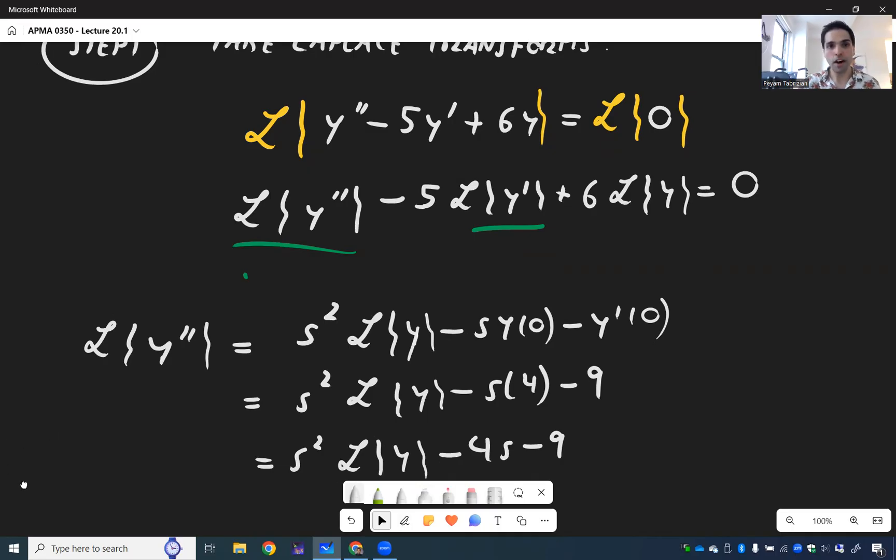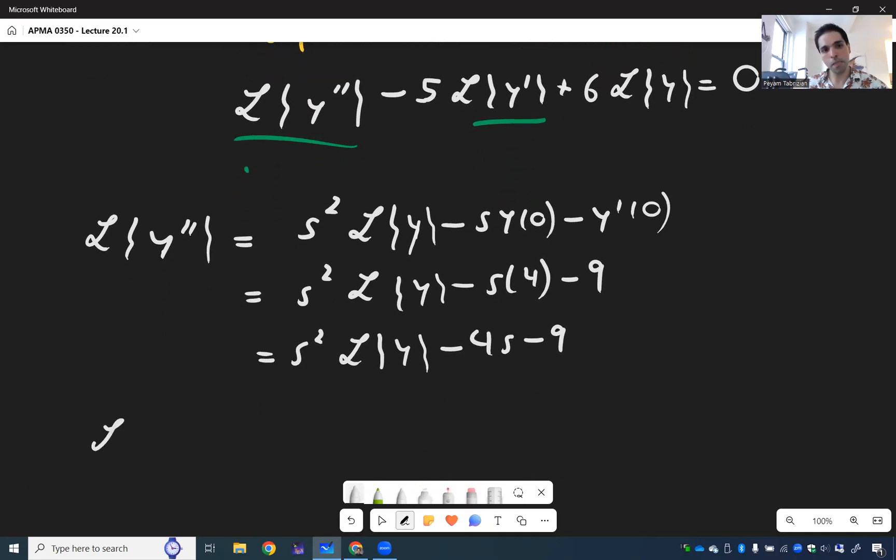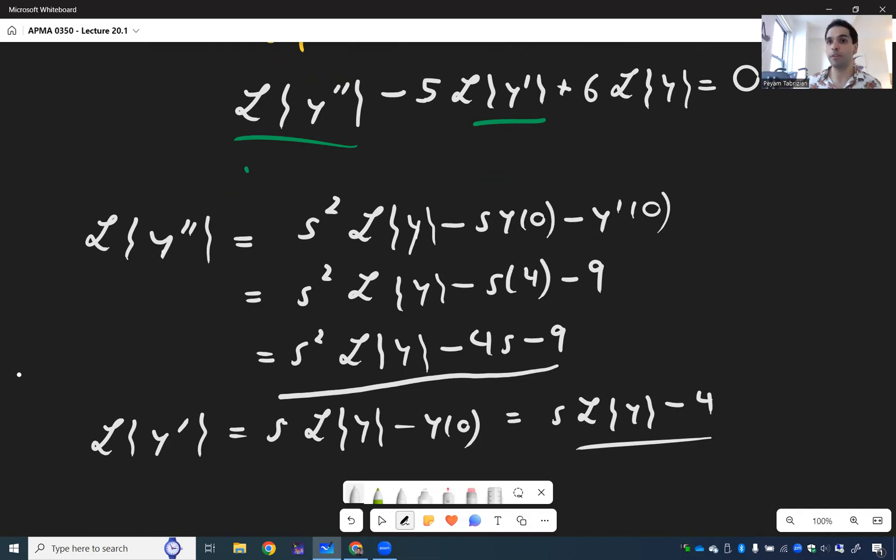That's on the one hand. On the other hand, L of y prime is S L of y minus y of 0. And that becomes S L of y minus 4. And, by the way, one thing I really like about this is, notice, it uses directly the initial conditions. So we directly use y of 0 and y prime of 0. Whereas before, we used them at the end.